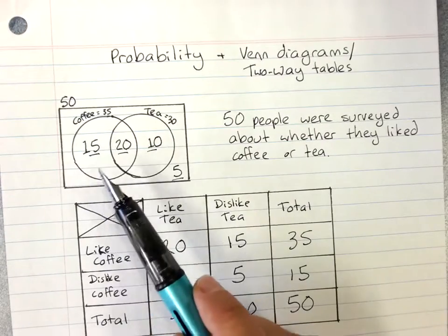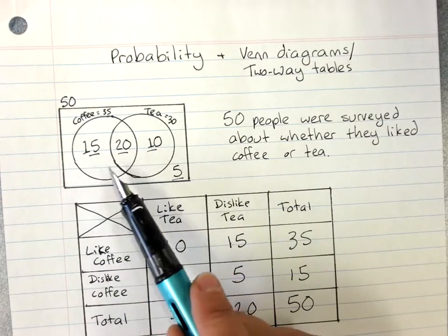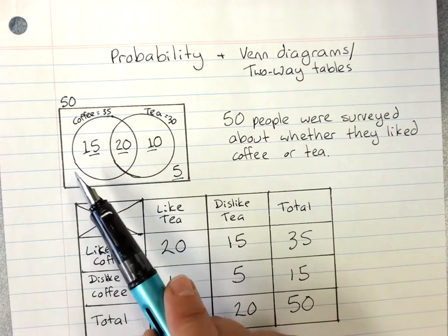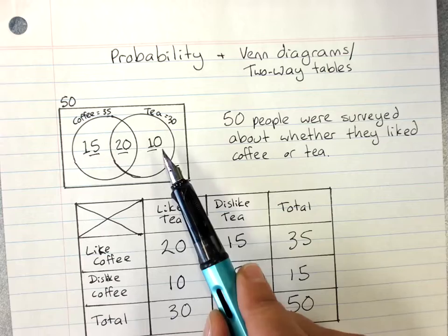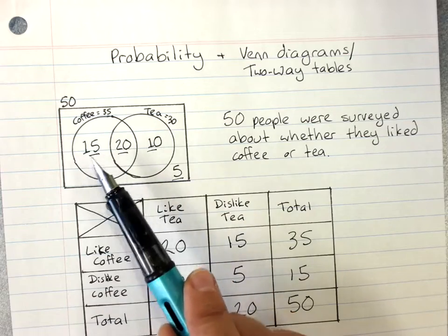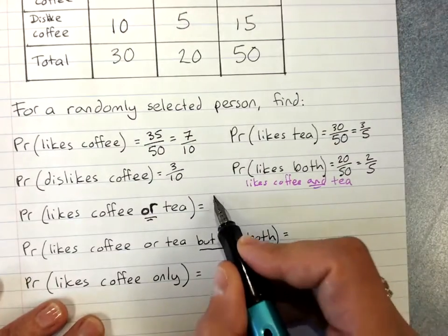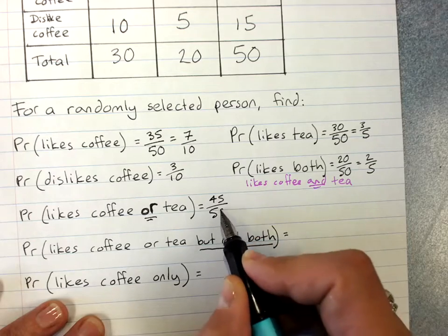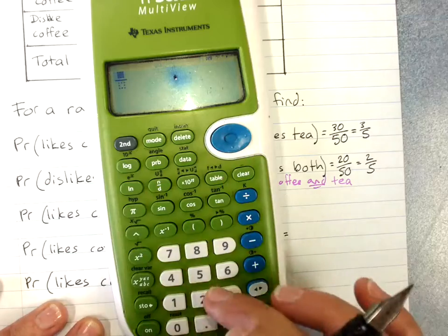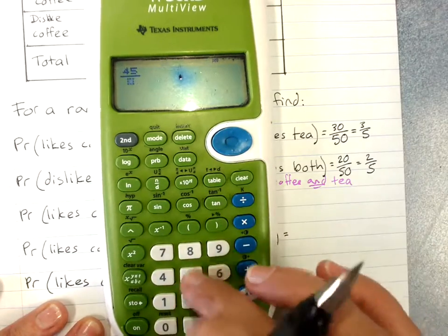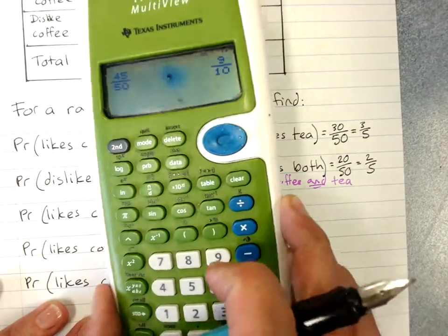So coffee or tea or both is easier to get from up here. Coffee or tea or both: 20 plus 10 is 30 plus 15 is 45. 45 out of 50. Check if you can cancel your fraction. 45 out of 50. 9 over 10.